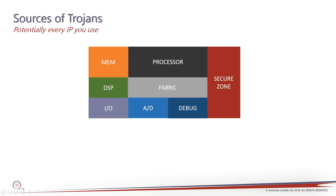A hardware trojan in a processor module, for example, can leak the secure key. If it's in a memory IP, it would allow access to the secure key from the processor. If the attacker can carefully analyze the state transitions and is able to reach a protected state in the processor IP from any state in the memory, that's a serious vulnerability.